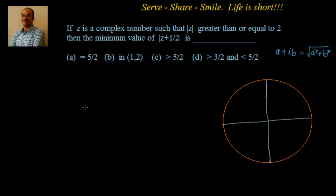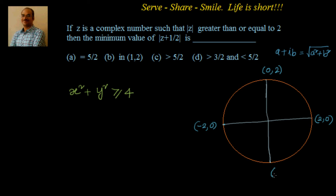Now let us solve the same problem using the geometric method. We have z is a complex number such that |z| ≥ 2, and we know that x² plus y² is greater than or equal to 4. The meaning of that is that the points (x, y) are on the circle or outside the circle. Some values can be (−2, 0), (2, 0), (0, 2), or (0, −2). So x² + y² ≥ 4 means (x, y) is a point outside or on the circle with center (0, 0) and radius 2.